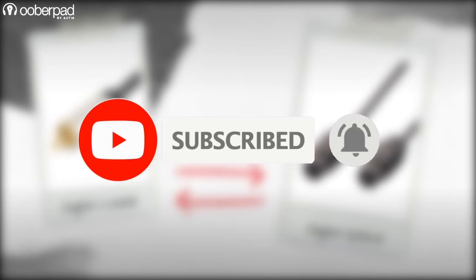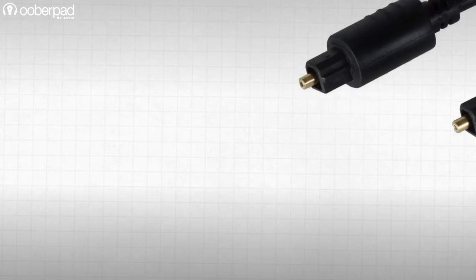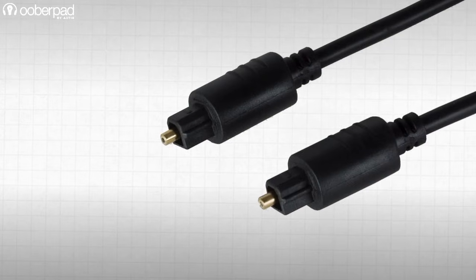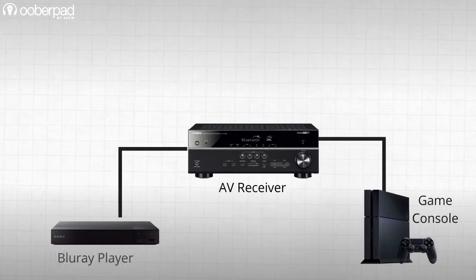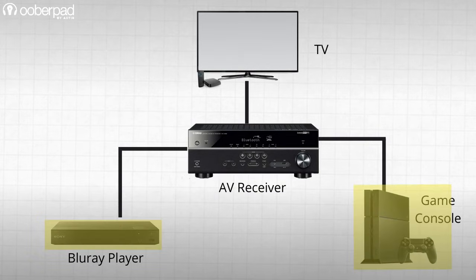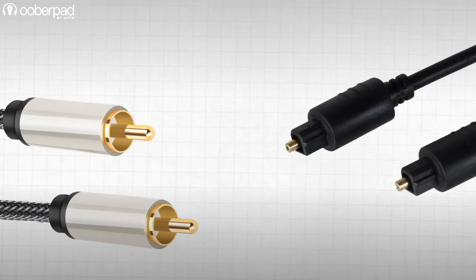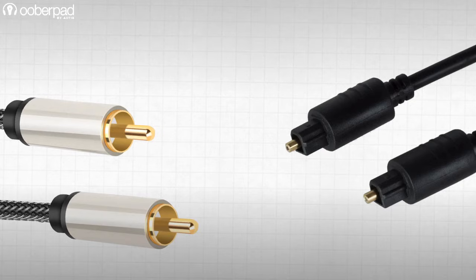For more than a decade, both digital coaxial and digital optical technologies have shared the responsibility of carrying and transmitting digital audio signals in high resolution between playback sources such as CD, Blu-ray, DVD, and other media players to amplifiers, receivers, and other sound systems. However, they are fundamentally different in terms of connector types, cables, and resolution support.